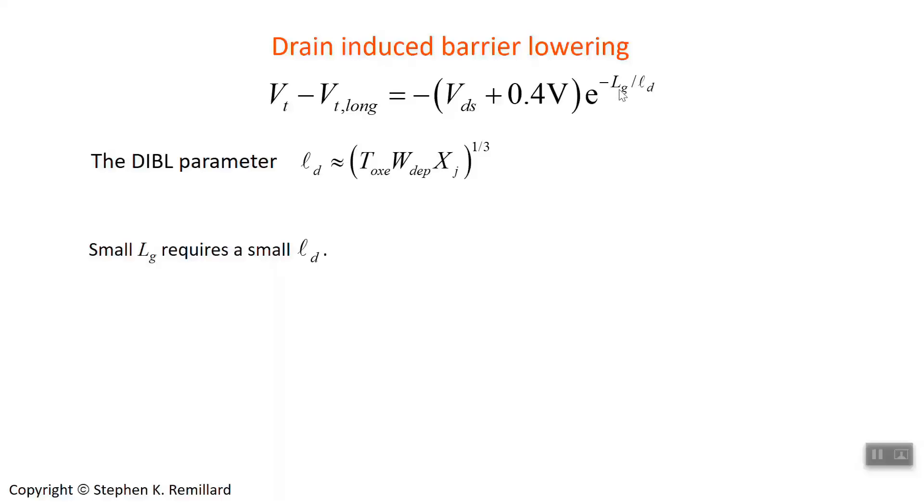As L sub G, the gate length gets really small, this exponential stops being negligible. What we really want to do is, as L sub G gets shorter, to avoid having this exponential become 1, you want to make the DIBL parameter small too. The DIBL parameter is the geometric mean of these three depths: the oxide thickness, the depletion width, and the junction depth.